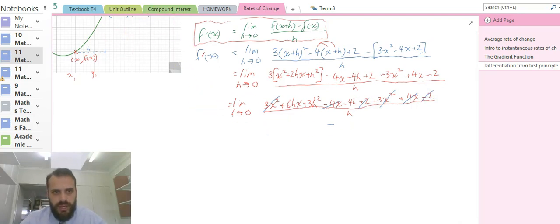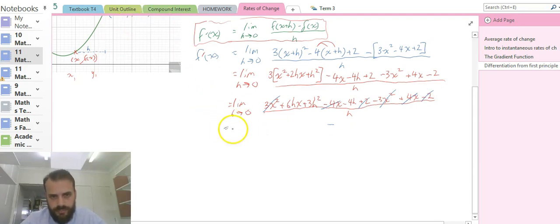Alright, let's rewrite it with all of that cancelled stuff taken out. Looking pretty good so far. We've written it with all of that cancelled stuff taken out. We end up with (6hx + 3h² - 4h)/h.